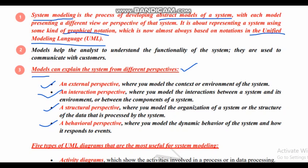The first one is the external perspective. External, as the name itself indicates, is related to the environment of the system. So the external perspective is about the context model of the software. This model will represent the overall environment of the system, or the factors or the components which are external to the system.